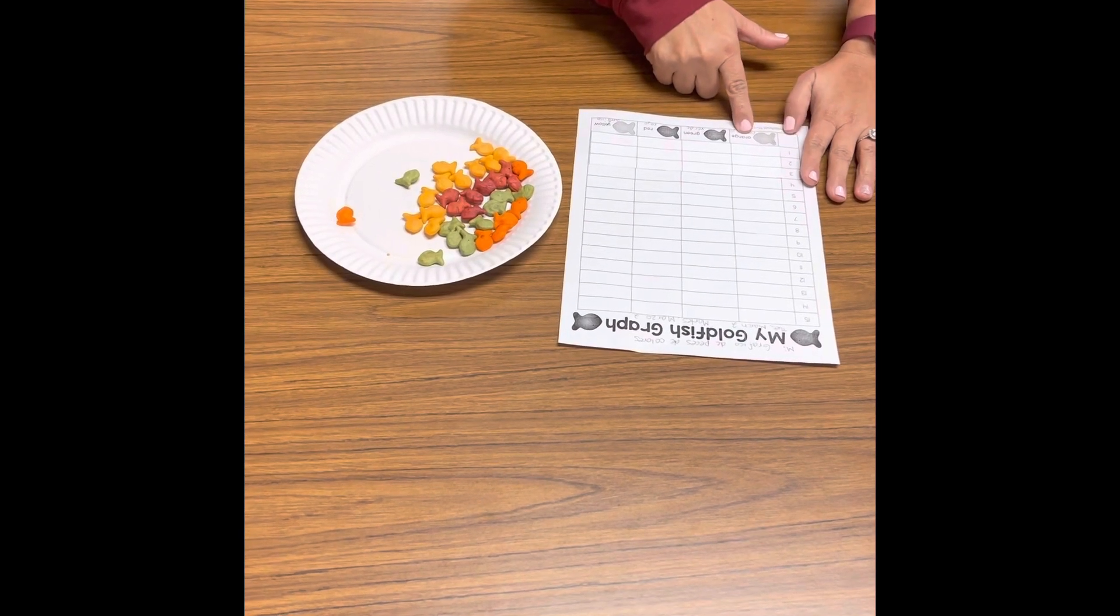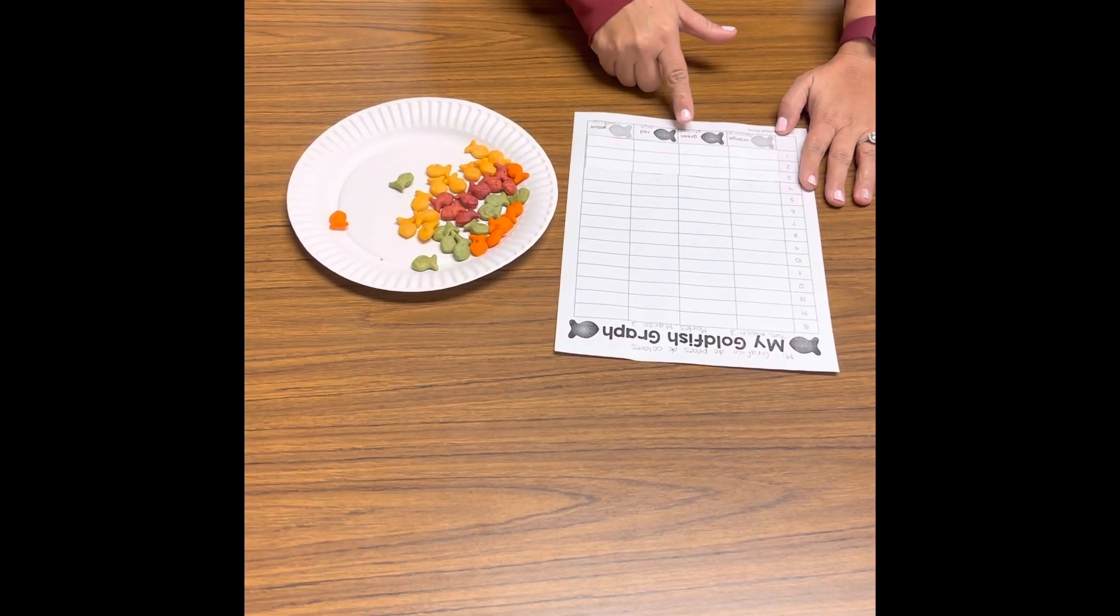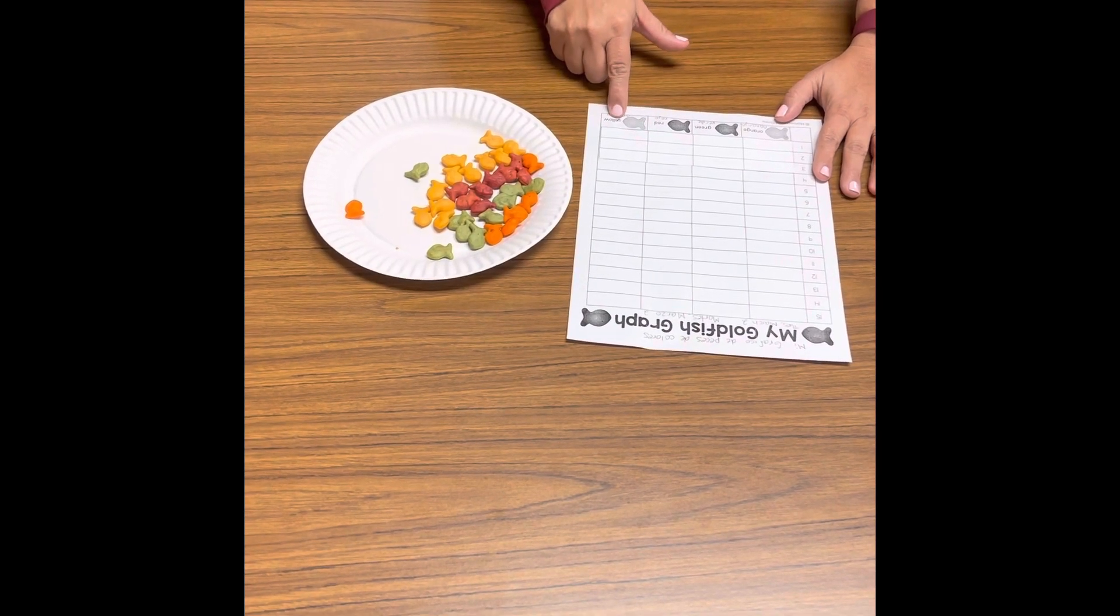Primero va el anaranjado, luego el verde, luego el rojo, y luego el amarillo.